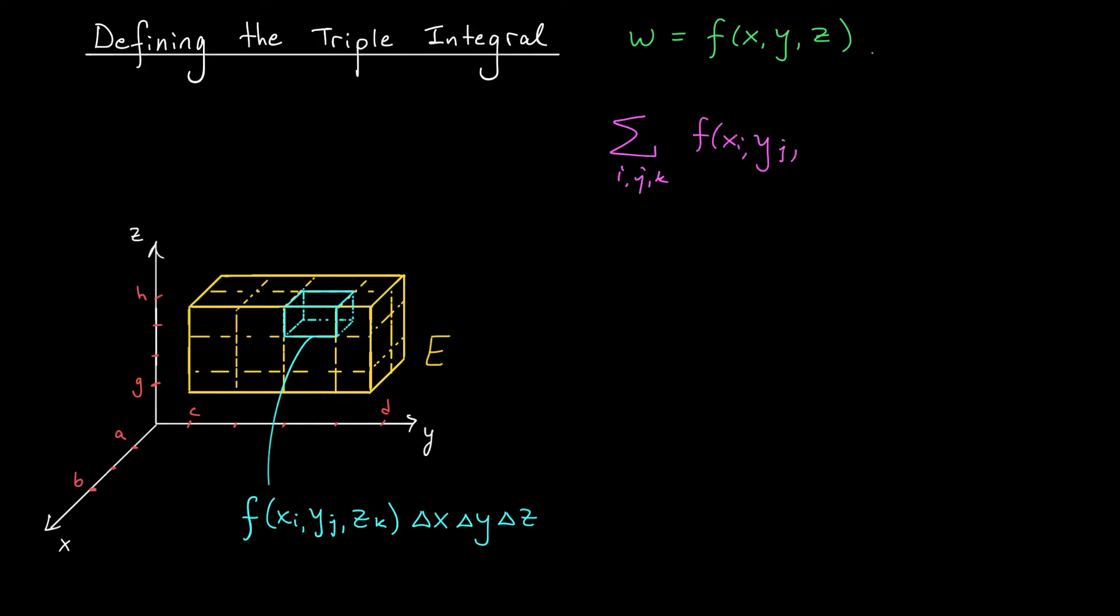f of xi, yj, zk, times the tiny volume of my cube, delta x, delta y, delta z. And then I take the number of cuts that I've made, and I let that go off to infinity.